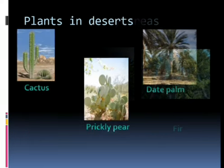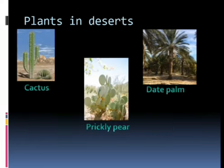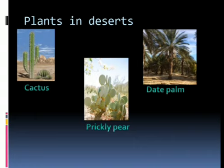Second, plants in deserts. As deserts are very hot and dry regions, plants grown in these areas have spines instead of leaves. Spines prevent the loss of water. Plants found in deserts are cactus, prickly pear, and date palm.